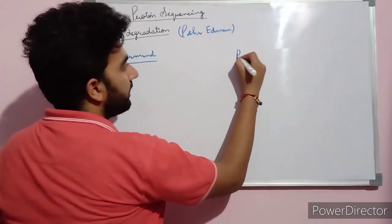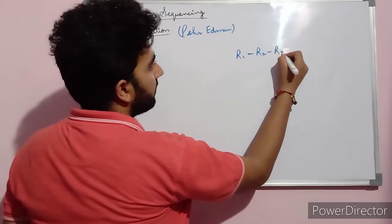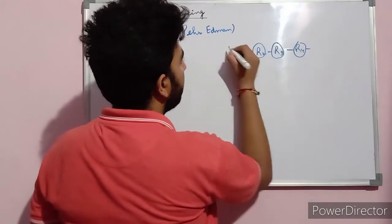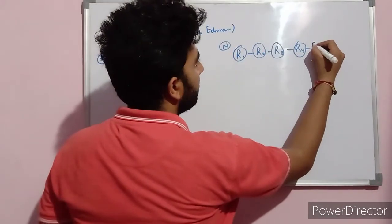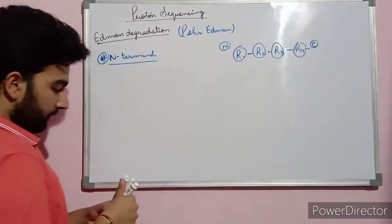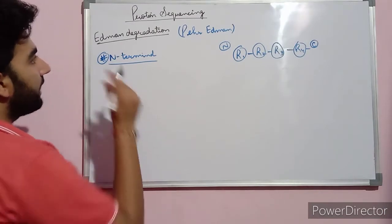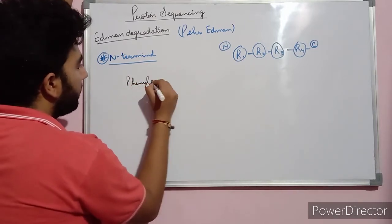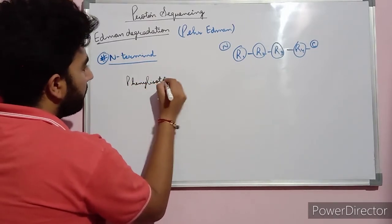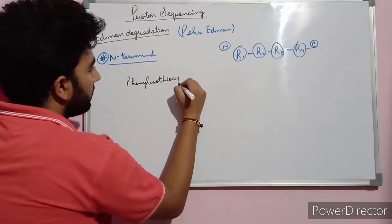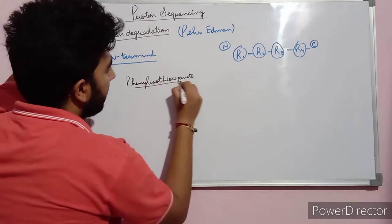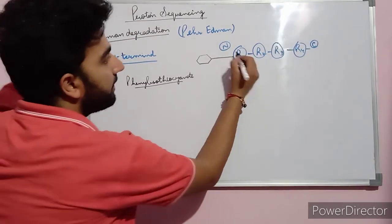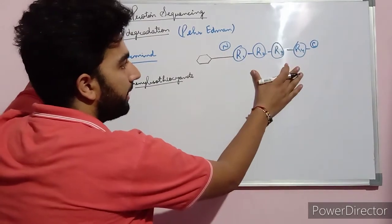If this is the polypeptide sequence, this is the N-terminal and this is the C-terminal. The main reagent that helps in the Edman degradation is known as phenyl isothiocyanate. This phenyl isothiocyanate combines with the N-terminal amino acid of the polypeptide chain.